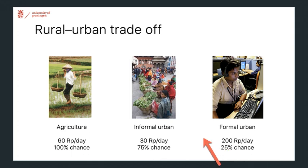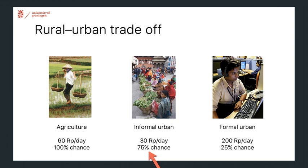On the other hand, they might end up in an informal job in the city, which would pay much less than either the formal urban job or the rural job in agriculture. We will see why this is an equilibrium outcome — that you have such an underpaid informal class.